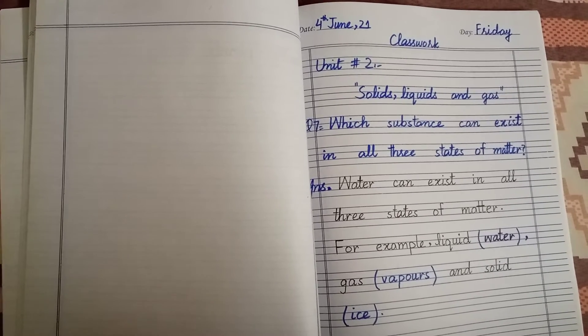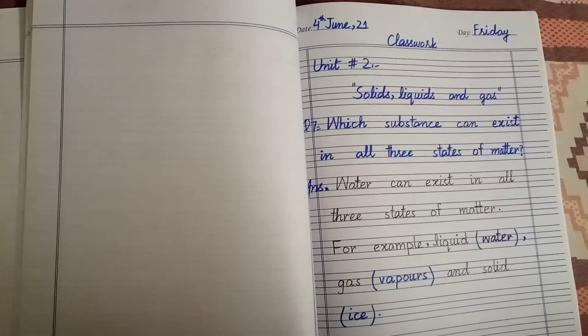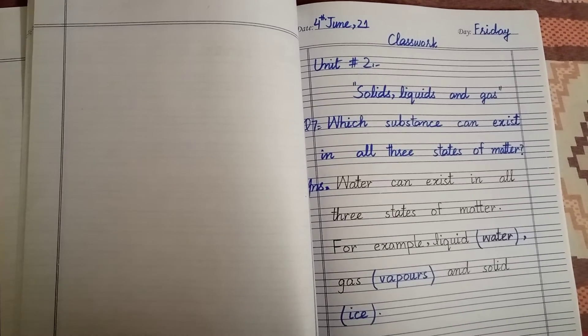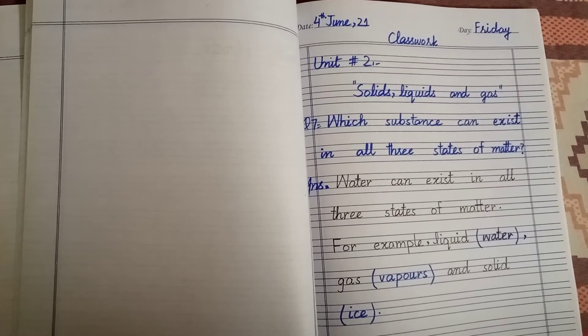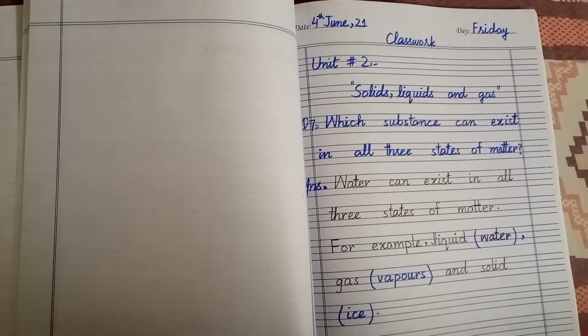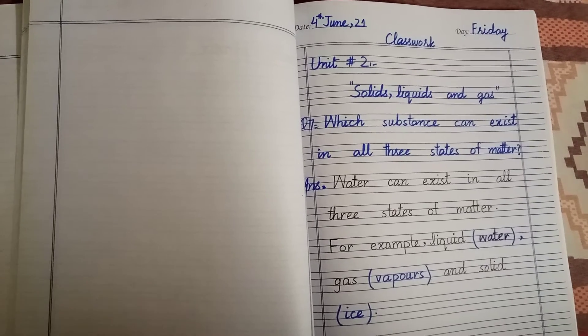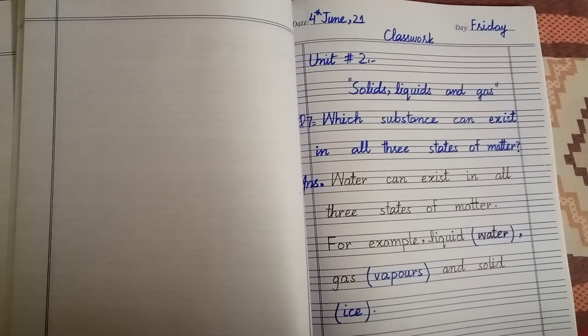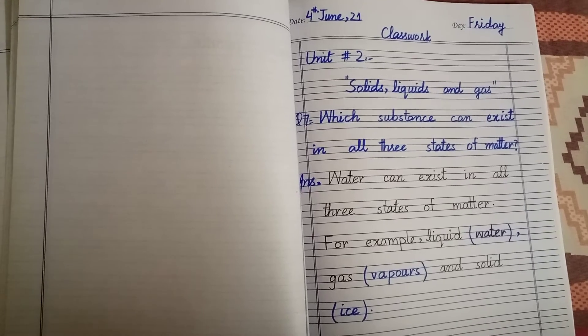And the question number 7 is, which substance can exist in all 3 states of matter? So the answer is, water can exist in all 3 states of matter. For example, liquid water, gas vapors, and solid ice.